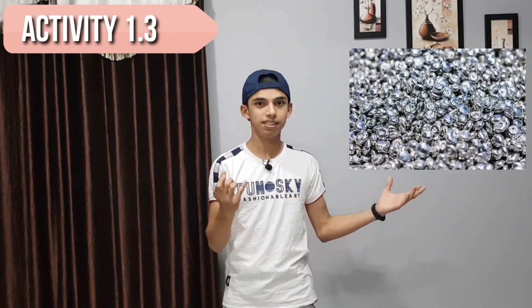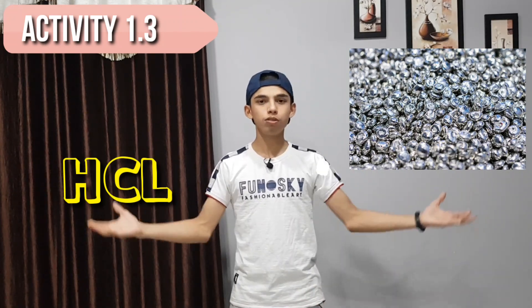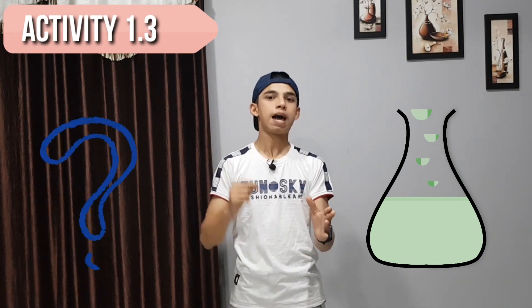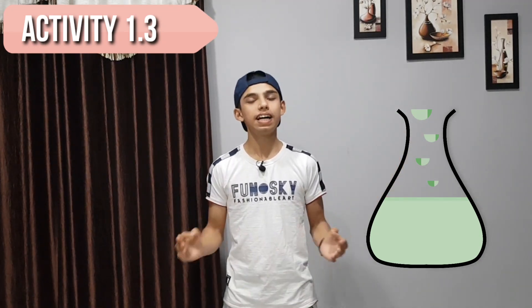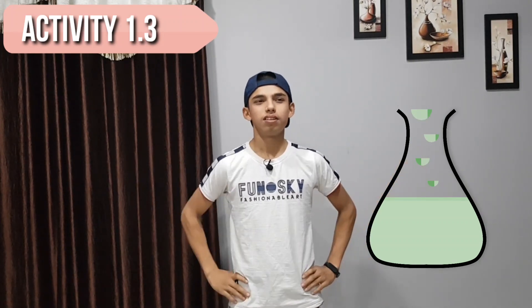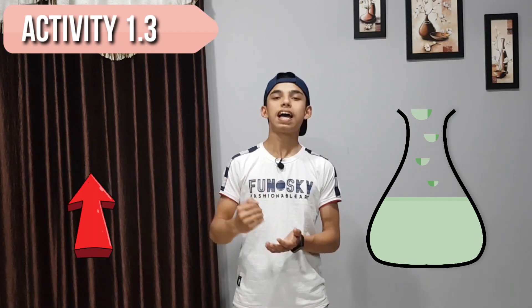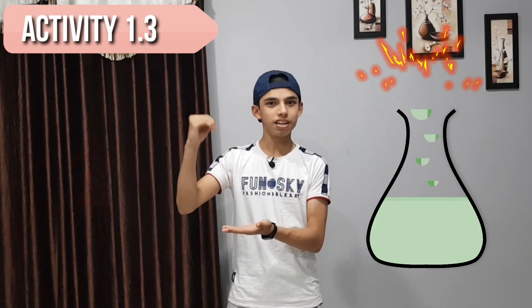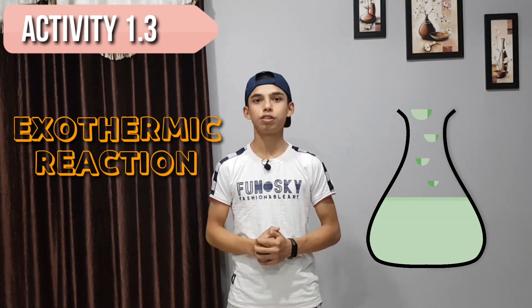In Activity 1.3 we have zinc granules. We take HCl or H₂SO₄, put them together with the zinc granules in a conical flask, and observe what happens. Observation one: there is a formation of some gas. We also check the temperature with a thermometer, and we find that the temperature has increased — meaning heat is released. Heat is released means it is an exothermic reaction.